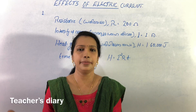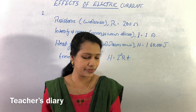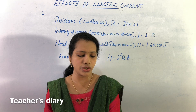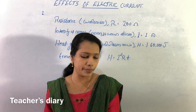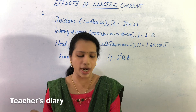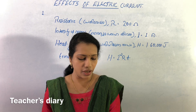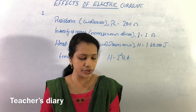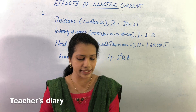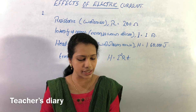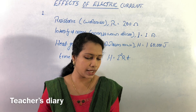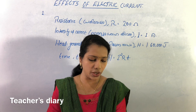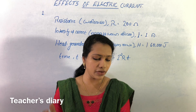Question number 2: The resistance of a conductor is 200 ohms. Current flow is 1 ampere. How much time will it take to produce 1,60,000 joules of heat?